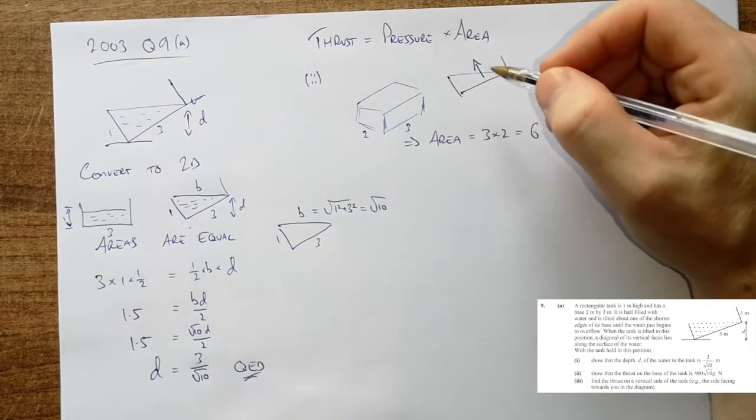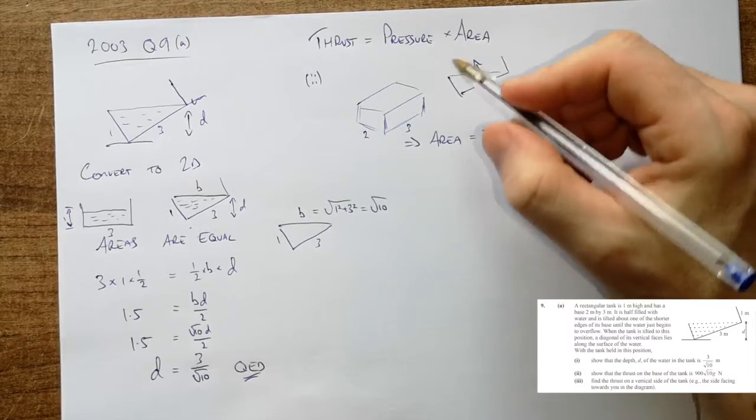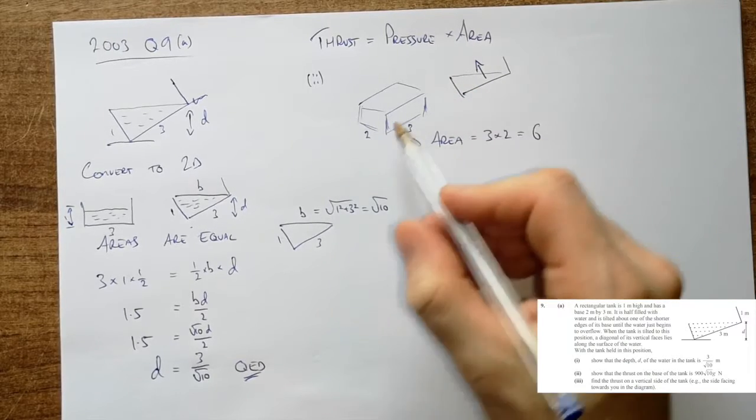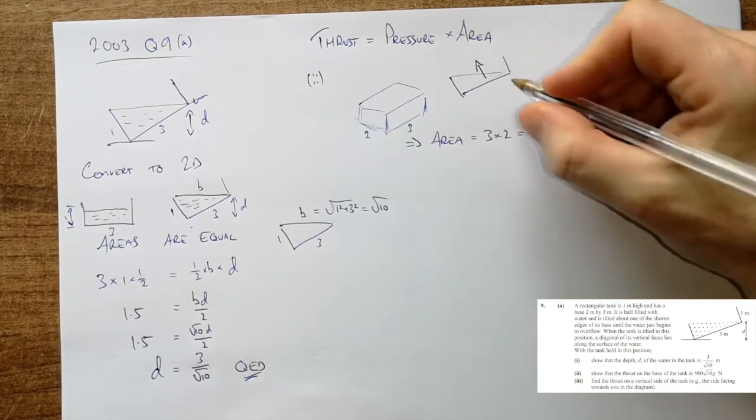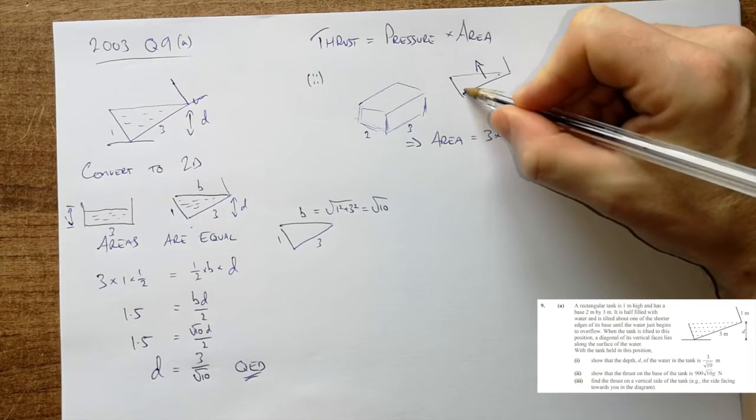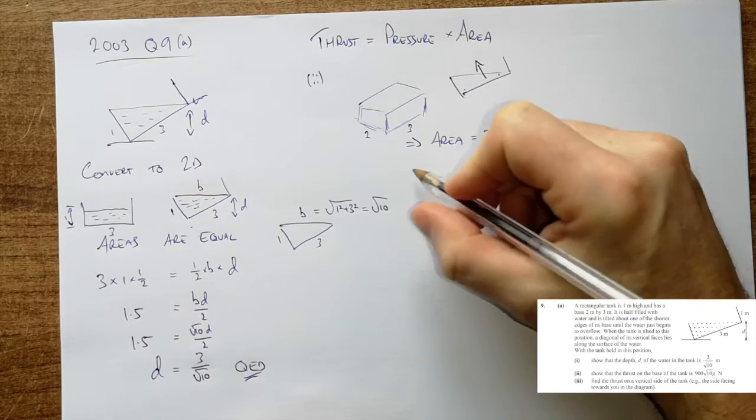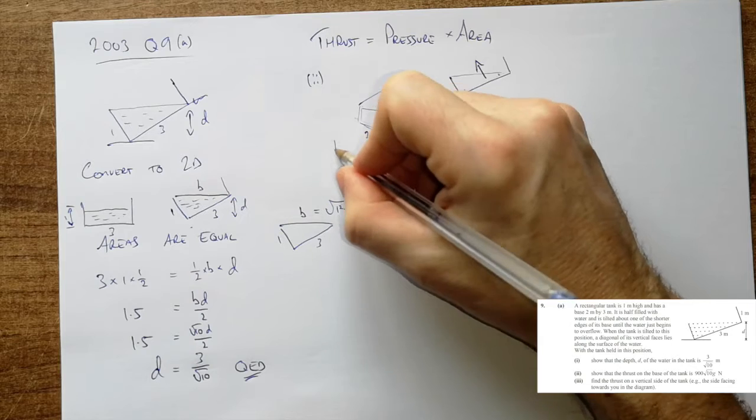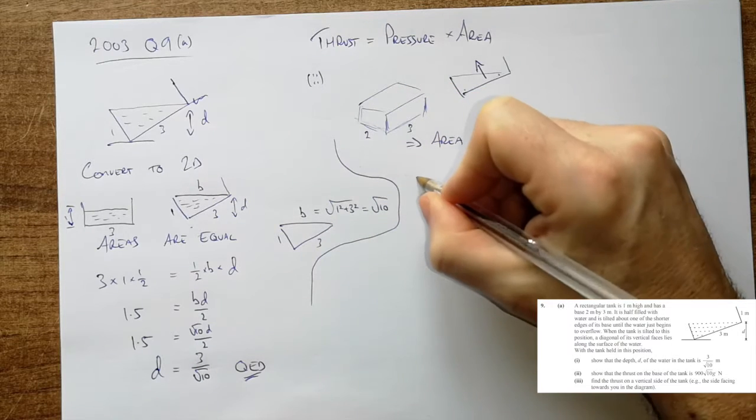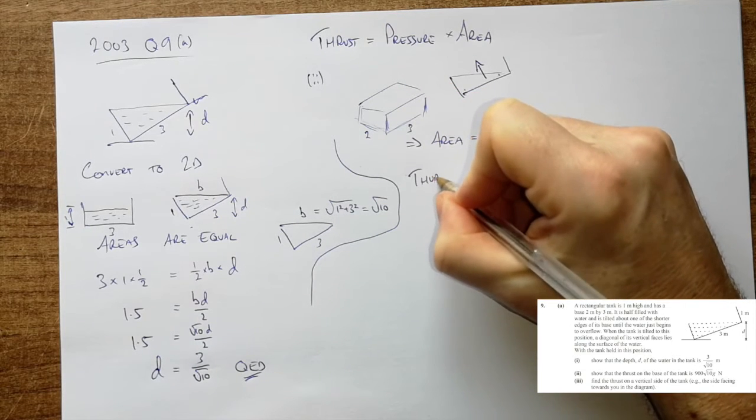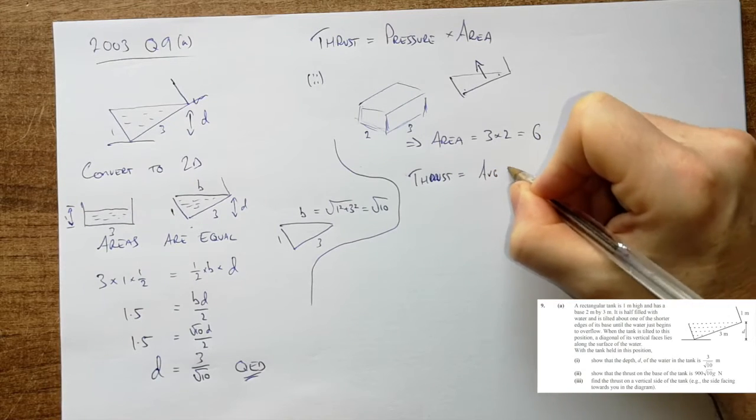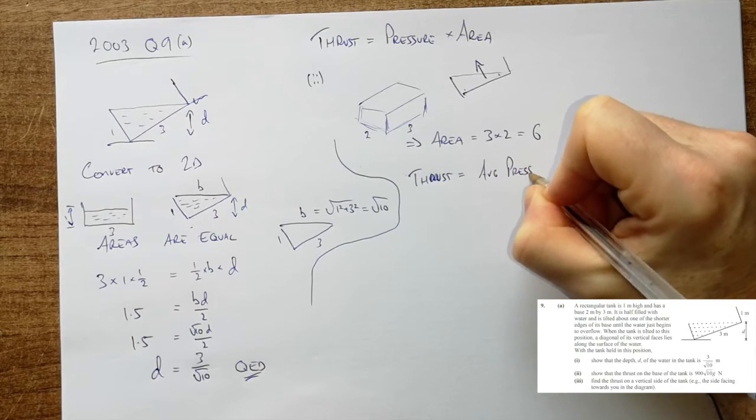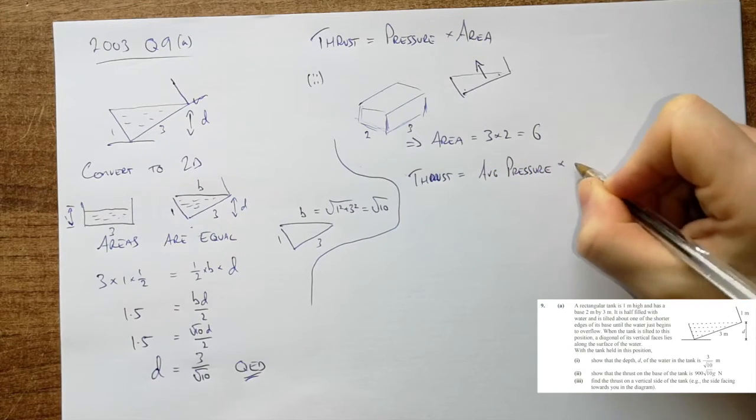What about the pressure? Well if we look at this, as it goes across the pressure is even. So we need to find the average pressure. You can see the pressure is very low here, it's very high here. So what we want is thrust is the average pressure by the area.